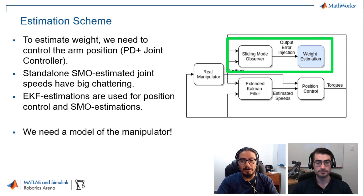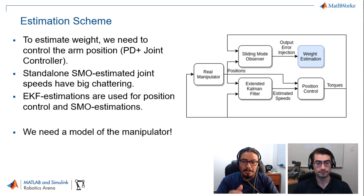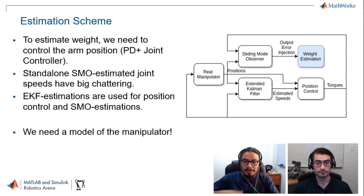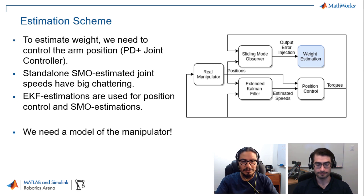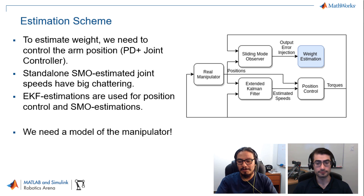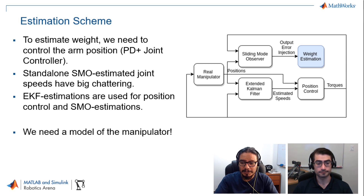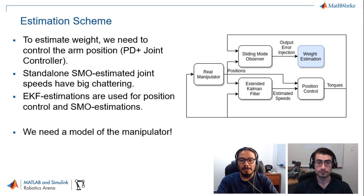The sliding mode observer is used only for estimating the weight of the grasped object. We need to drive the manipulator to certain positions because, for example, if the arm is just hanging down, the object also hangs and does not exert any torque on the joints — there is no meaningful signal for reconstructing the object's weight. So we need the object to exert torque on at least one joint. A position where the manipulator is extended in front of the robot is a very good configuration.